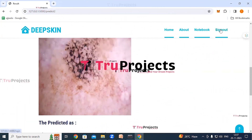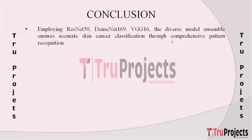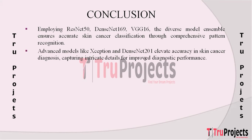In conclusion, the project employs advanced models ResNet-50, DenseNet-169, and VGG-16, ensuring a comprehensive approach to skin cancer classification by leveraging the unique strengths of each model to enhance accuracy in identifying diverse patterns within medical images. The inclusion of advanced models like Xception and DenseNet-201 reflects a commitment to pushing the boundaries of medical image analysis, contributing to improved performance in skin cancer diagnosis.